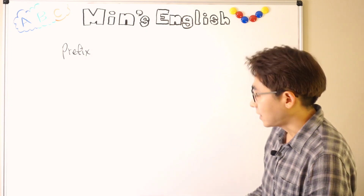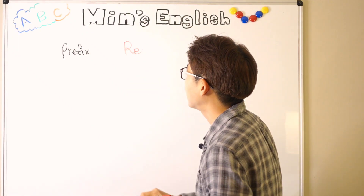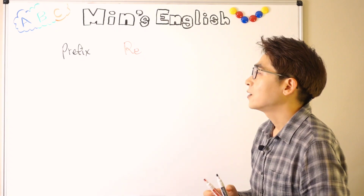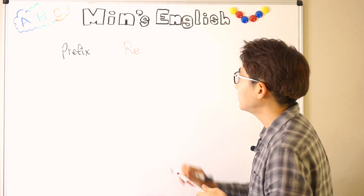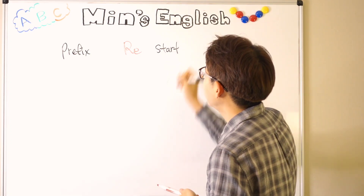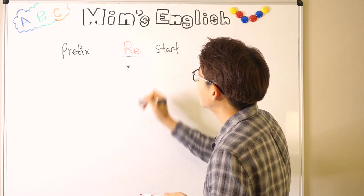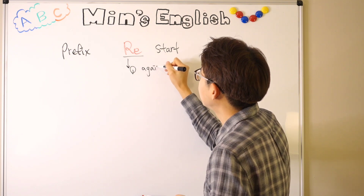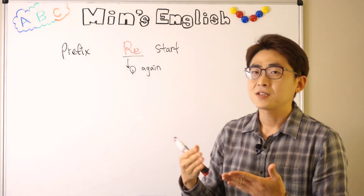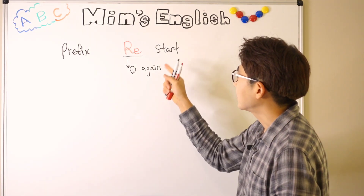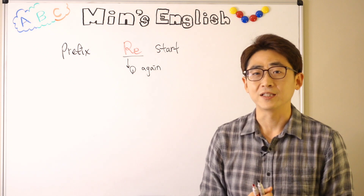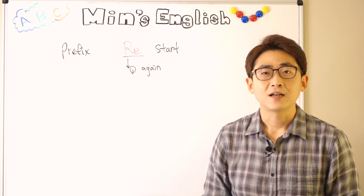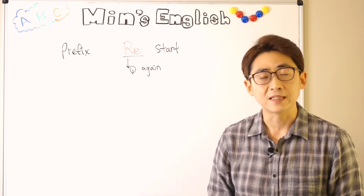And today, our prefix is 're-'. We use this one a lot, especially when we want to modify a verb. For example, we can put the word 'start' — the word 're' has a meaning of 'again.' So I want to start something again, and we put 're' in front, and this word becomes 'restart.' For example, you started an engine and then it died out and you want to start it again — you use 'restart an engine.'